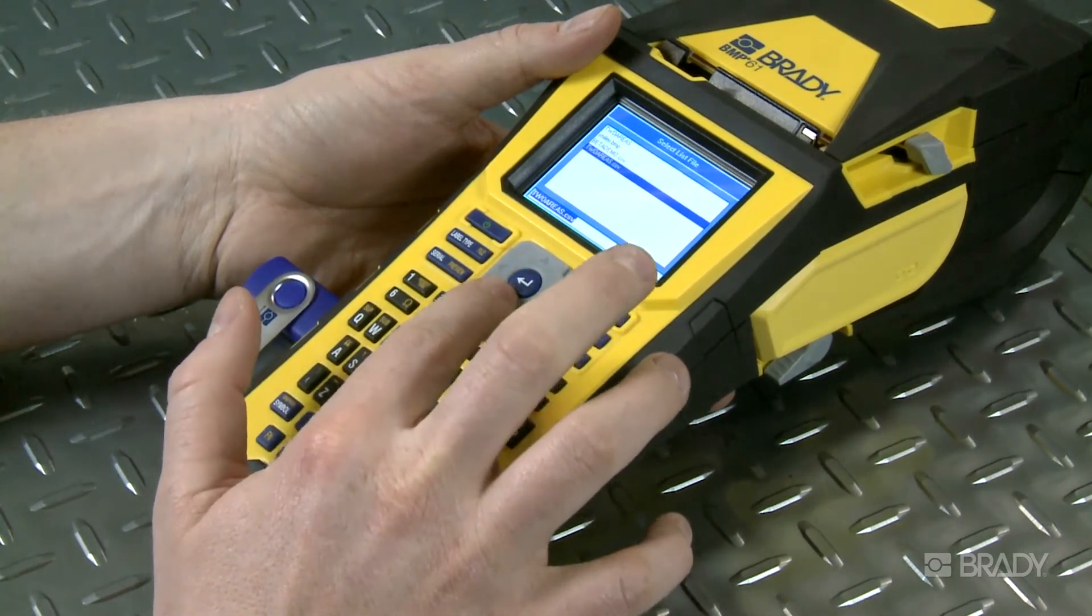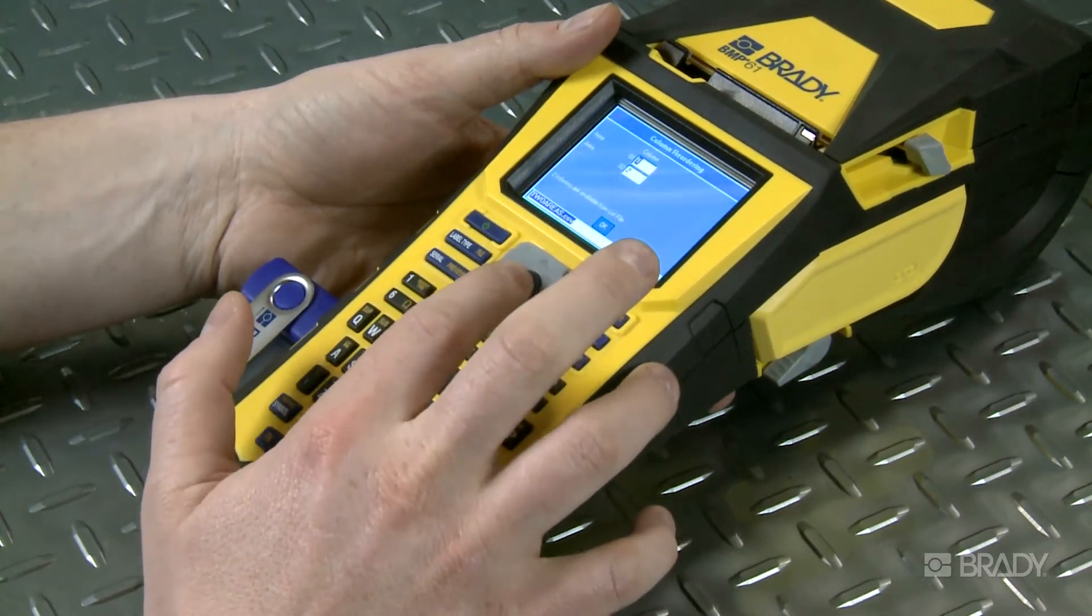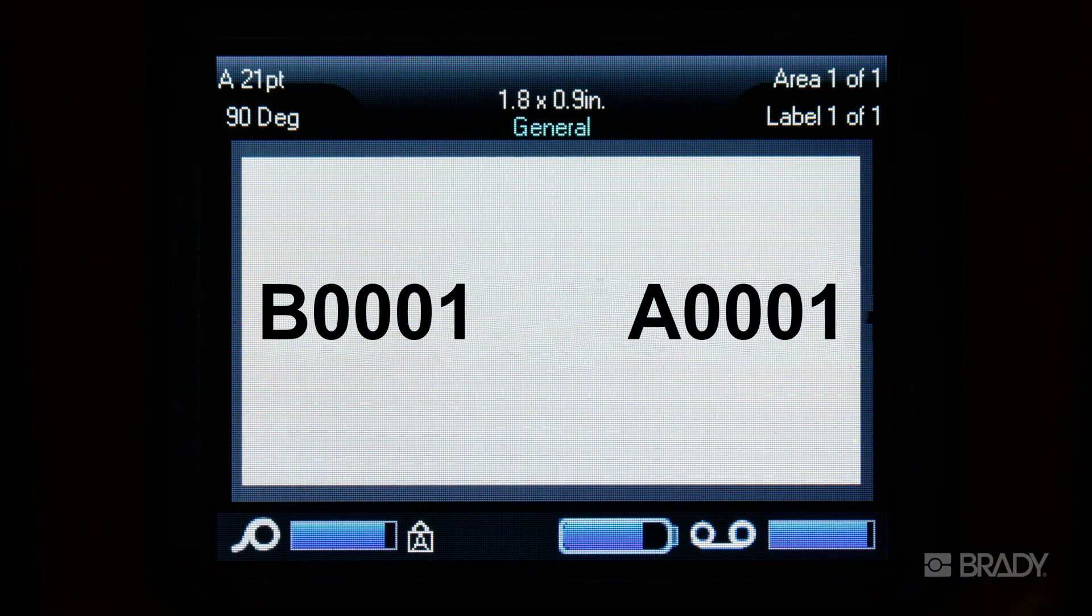The difference between simple and advanced lists is that the advanced list lets you rearrange the order of your columns. On the next screen, you will have the ability to choose which column you want in each printable area.